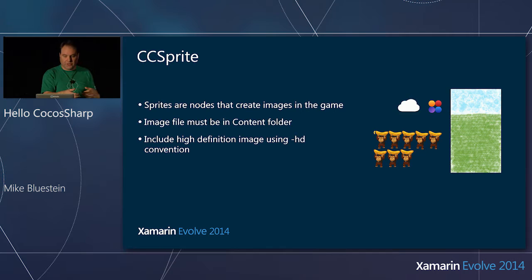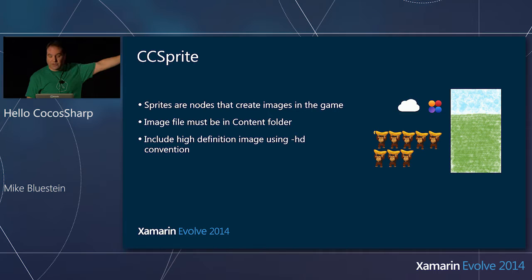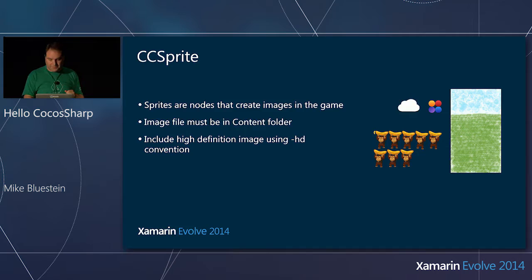A sprite abstracts the texture, abstracts the interaction with the GPU, and you can then move it independently of other images through touch, animation, physics, and so on. The image for a sprite's content can either be a loose image in the content folder or contained in something called a sprite sheet. There's a convention-based way to load high-definition versus low-definition graphics, handled automatically for you.